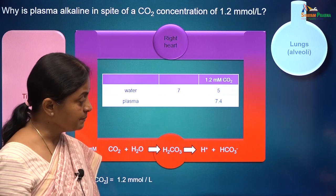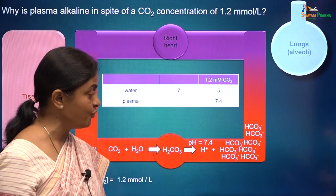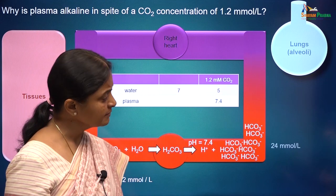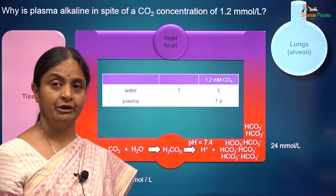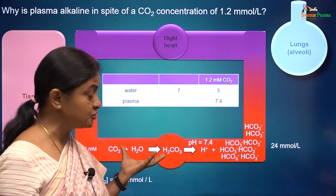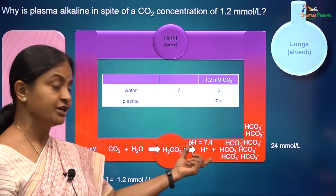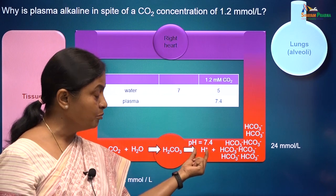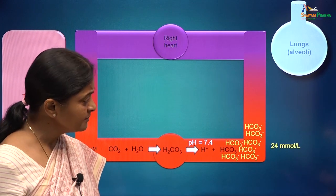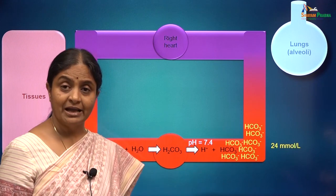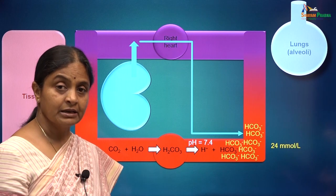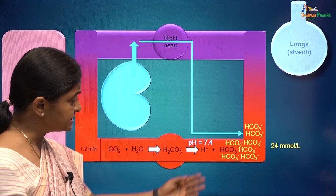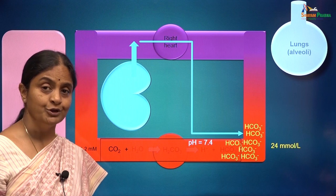The answer is that plasma pH is at 7.4 because plasma has an excess of bicarbonate ions — 24 millimoles per liter. Because bicarbonate is already present in excess, the reaction cannot proceed rightward, and that is what prevents ionization of carbonic acid to form more free hydrogen ions. This excess bicarbonate in plasma actually comes from the kidneys.